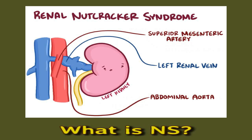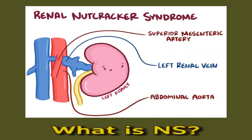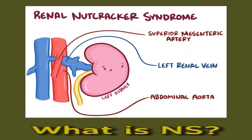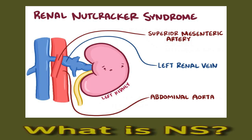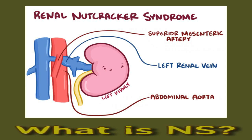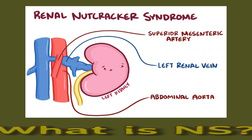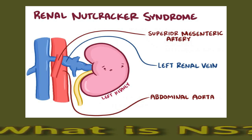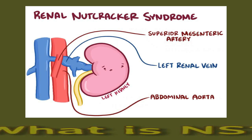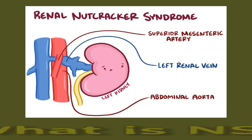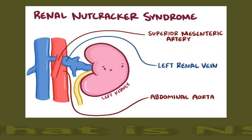There are two main types of nutcracker syndrome: anterior and posterior. Anterior nutcracker syndrome is more common and involves compression of the left renal vein between the abdominal aorta and the superior mesenteric artery. Posterior nutcracker syndrome is less common and involves compression of the left renal vein between the abdominal aorta and the spine. Some experts also recognize a mixed type, which involves various changes to the blood vessels.